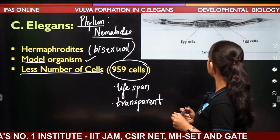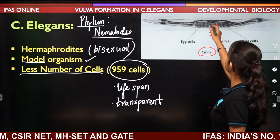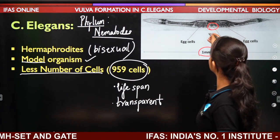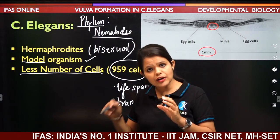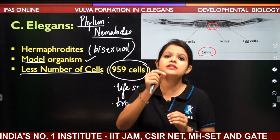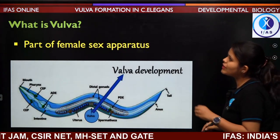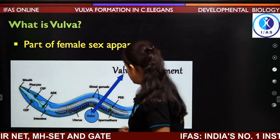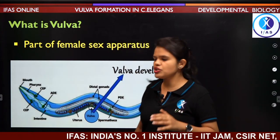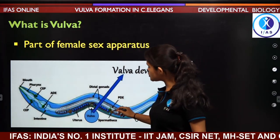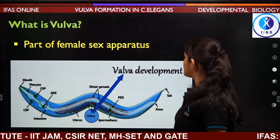Looking at a diagram, C. elegans is generally a worm about 1 millimeter long. The vulva is an opening through which eggs are laid into the environment, and it also serves as a passage for the movement of sperm towards the female gamete. It is part of the female sex apparatus and helps in laying eggs generally into the soil.